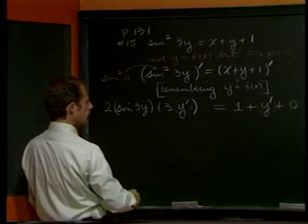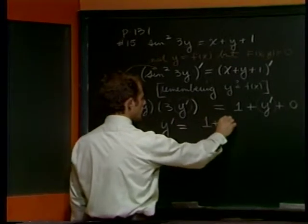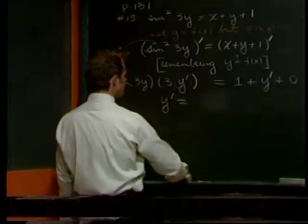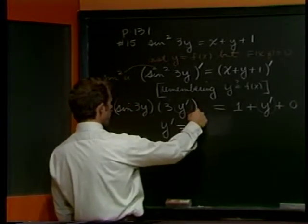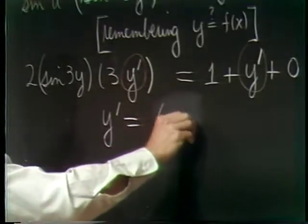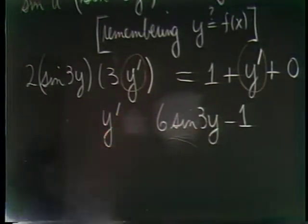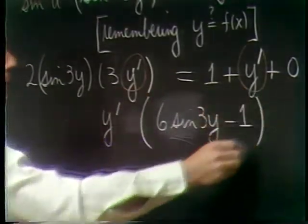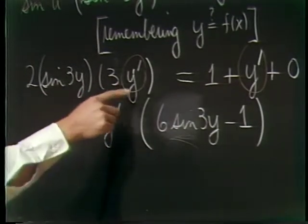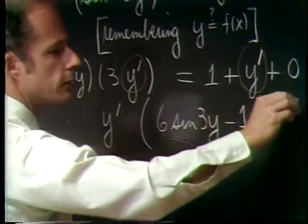So it looks like, if I haven't made a mistake, y prime is that stuff on the right-hand side. Oops, not that stuff over there at all. I've got to subtract y prime from both sides. Okay, let me do that one first. 6 sine 3y minus 1 times y prime. Okay, so I had a 6 sine 3y y prime on the left. I had a single y prime on the right, so I subtract that. I'm left with just a 1 on the right-hand side.